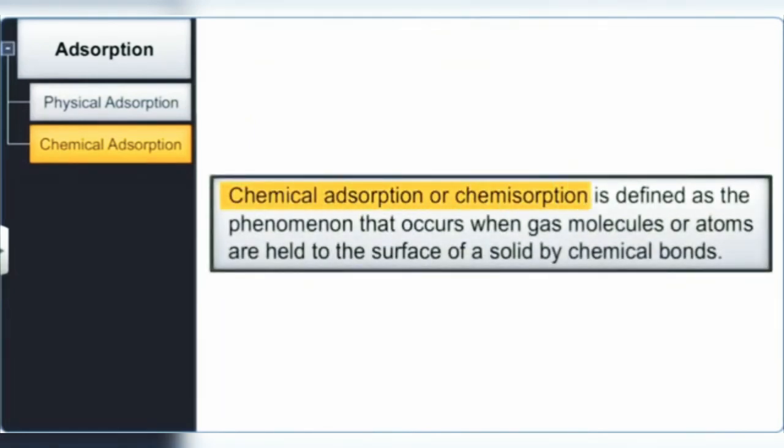Chemical adsorption or chemisorption is defined as the phenomenon that occurs when gas molecules or atoms are held to the surface of a solid by chemical bonds.